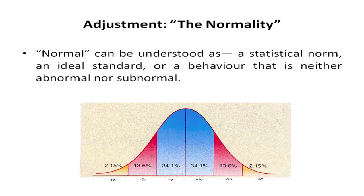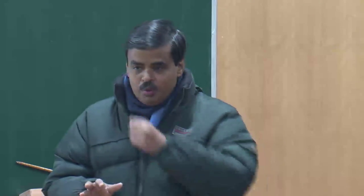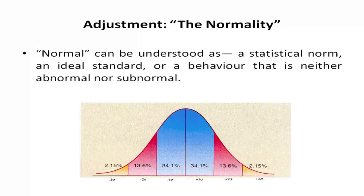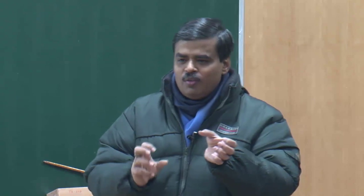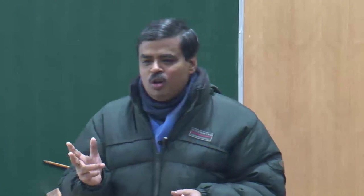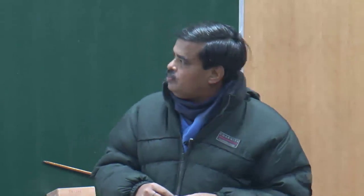Now, there could be different ways of defining normality if we are looking at it from a scientific viewpoint, the way a psychologist would look at it. One way of defining normality is that it is a statistical norm. In fact, if you break the word 'norm,' from there you get normality or normal. Your compliance to the norm makes you normal; if you have difficulty complying to the norm, your normality is at stake. So one way of defining normality could be to look at it as a statistical average.